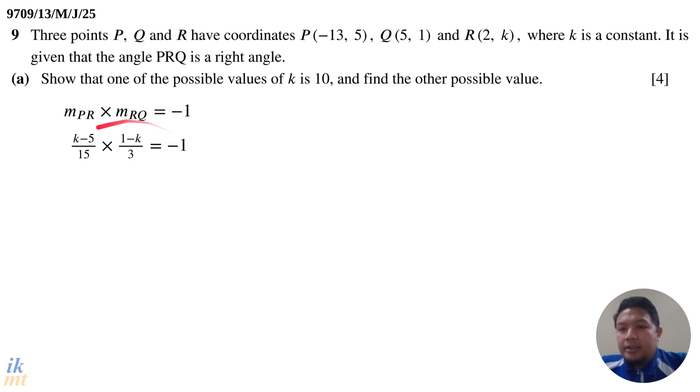We go ahead and set up for gradient of PR and gradient of RQ and make it equal to -1. Notice that this results in an equation with only one unknown, so there is a possible solution to this. We go ahead and simplify it to this. It becomes (k - 5)(k - 1) = 45. Now what you can do from this point is actually just go ahead and expand that and solve and you'll get that one of the answers is 10. However, because we just want to show that one of the possible values is 10, we can just substitute k equals 10 into this equation and show that we do indeed get 45.